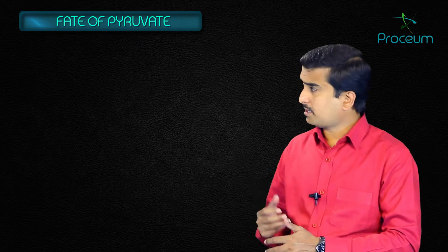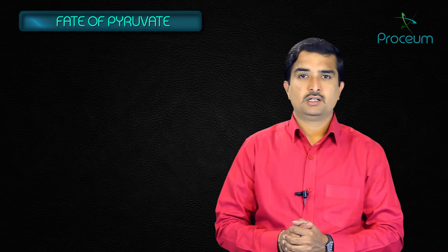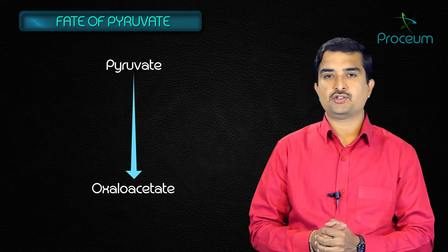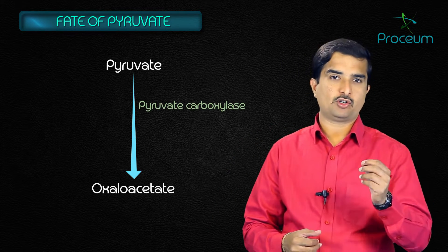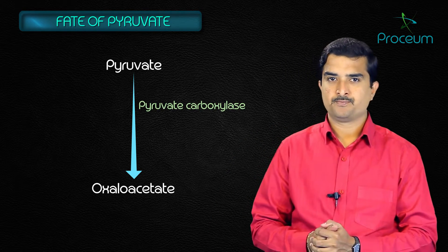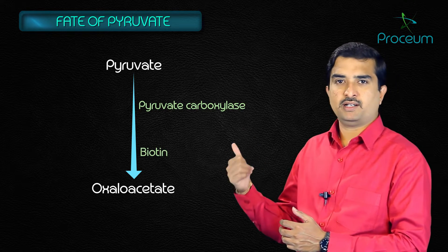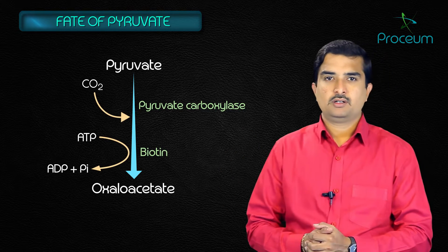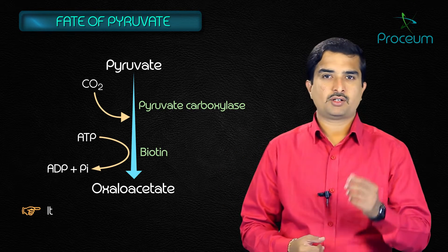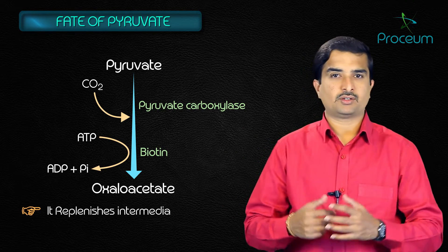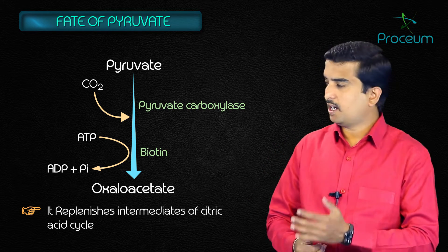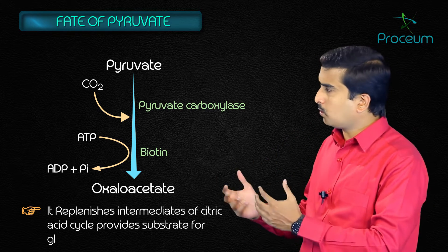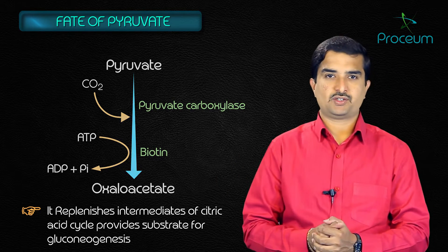The second fate is carboxylation of pyruvate to oxaloacetate by pyruvate carboxylase. This is a biotin-dependent reaction. It is important because it replenishes citric acid cycle intermediates and provides substrate for gluconeogenesis.